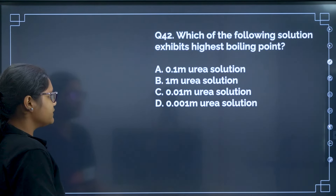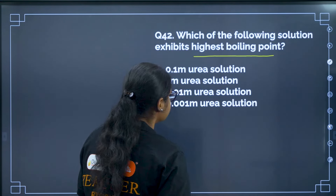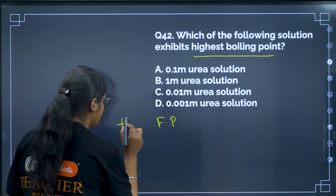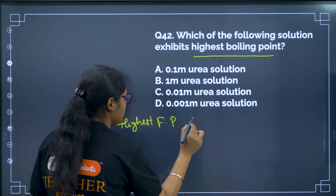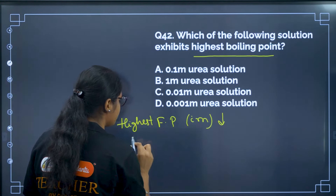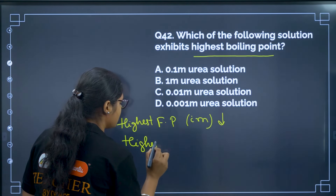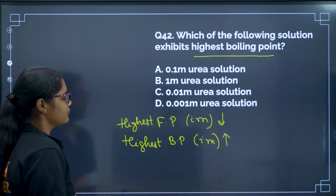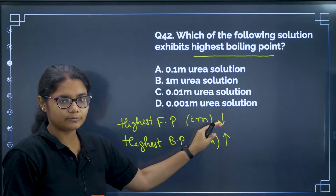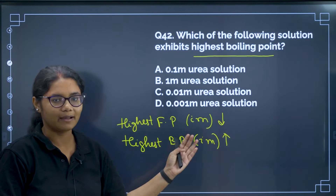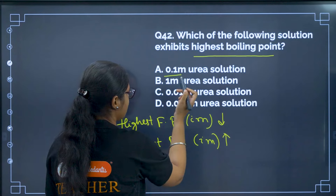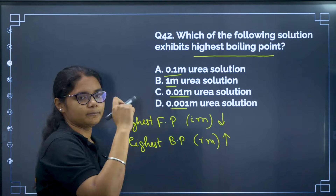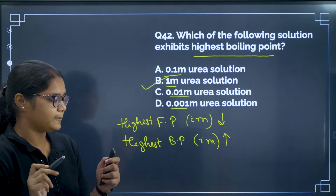Question 42: Which of the following exhibits the highest boiling point? For highest freezing point the i×M value should be least, but for highest boiling point the i×M value should be maximum. Calculating: option A = 0.1, option B = 1, option C = 0.01, option D = 0.001. The highest value is option B. Correct answer is option B.